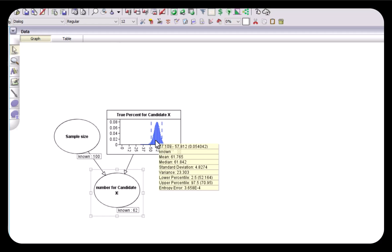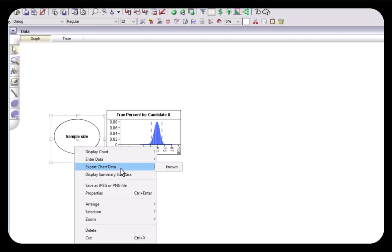You can see that it's quite a wide distribution because the 95 percent confidence interval here goes from about 52 percent to 71 percent.